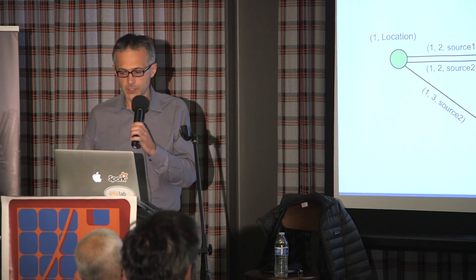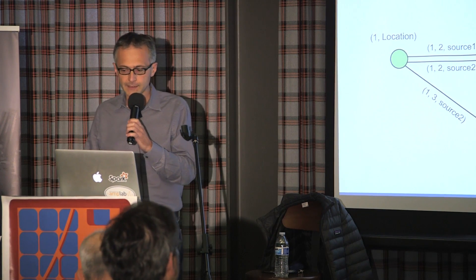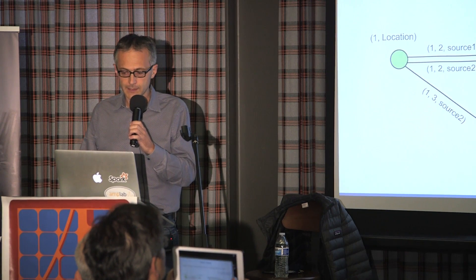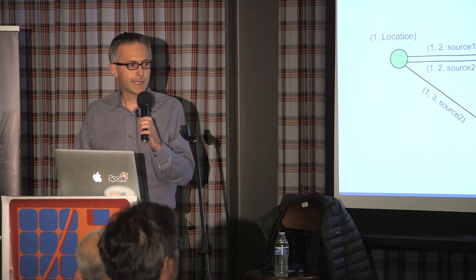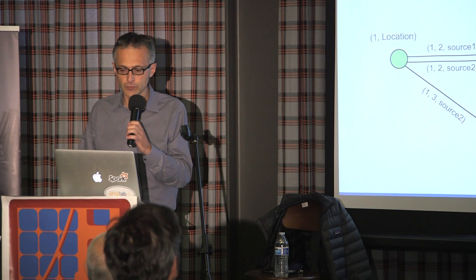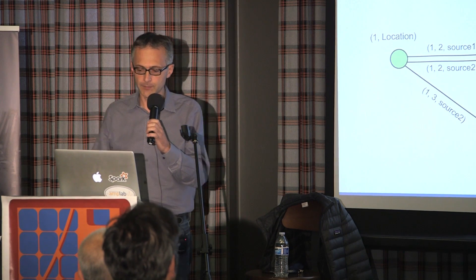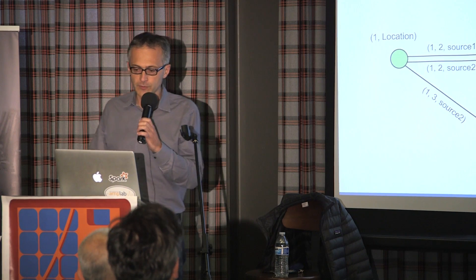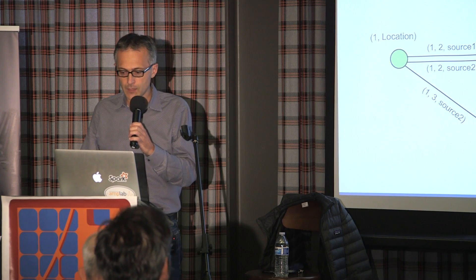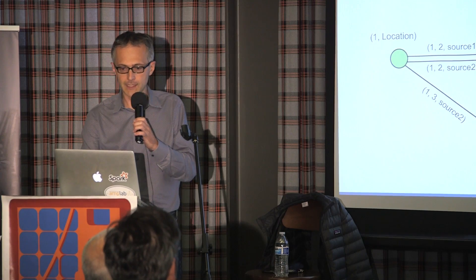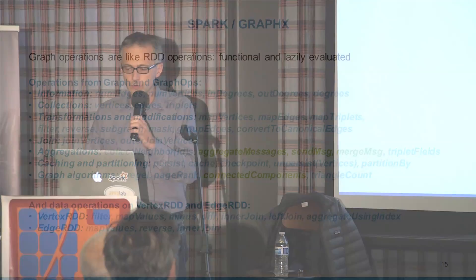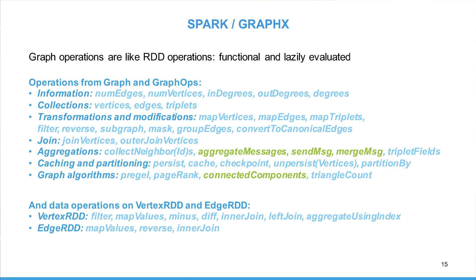GraphX models graph information through the graph class, accessible as a table of vertices, edges, or triplets. A vertex represents a node, an edge a relationship, and a triplet represents two connected nodes with the relationship. At times it can be more efficient to use triplets over looking up vertices and edges separately. Vertices and edges store attributes with user-defined object types VD and ED. GraphX provides a comprehensive set of operations including high-level graph information such as number of edges or vertices, access to collections, transformations, aggregation, and graph algorithms — and I will use connected component for the rest of the presentation.